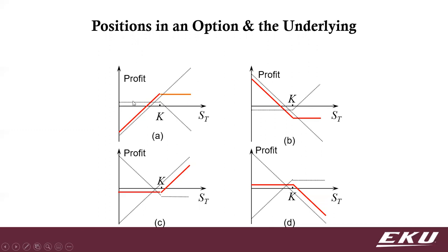Similarly, a sold call means you make money up front but lose money once the stock price exceeds the strike price, because someone will exercise their call against you. If you bought the option, you start off negative. So if the payout starts above zero, you wrote the option; if it starts below zero, you bought it. By combining the underlying stock — or a short position — with options, you can create these different payout structures.